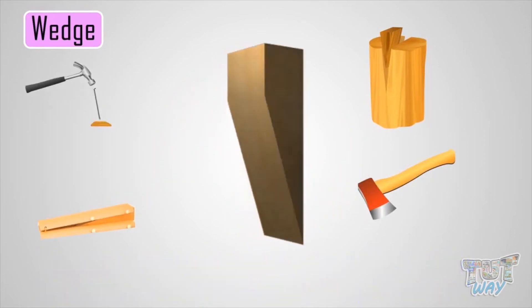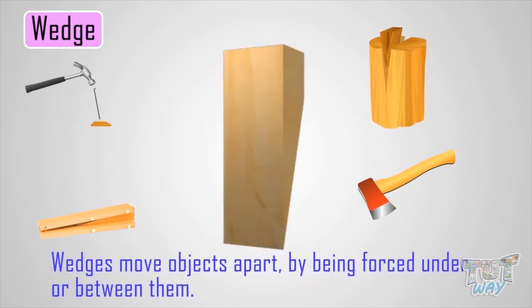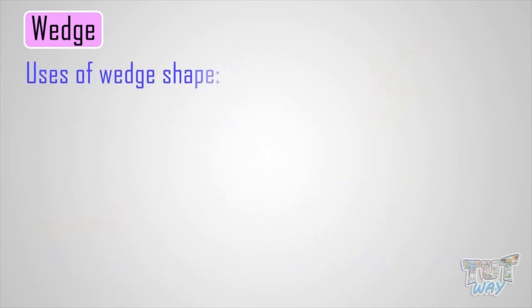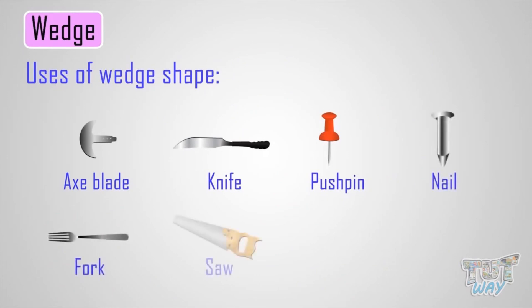Wedges move objects apart by being forced under or between them. Here are some uses of this wedge shape: an axe blade, a kitchen knife, a push pin, a nail, a fork, a saw, axe heads, and door stops are examples of a wedge.